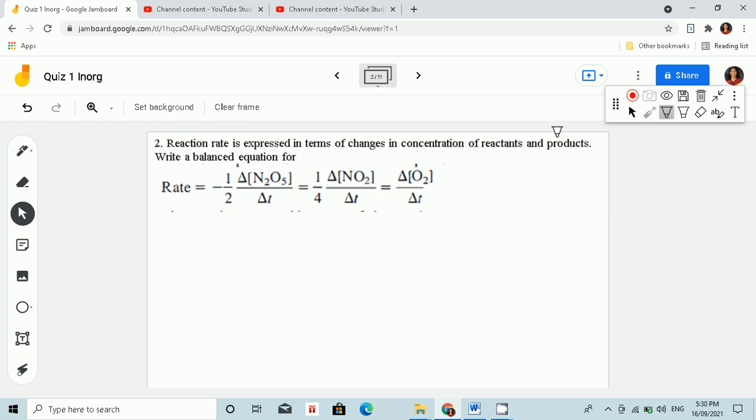So how are we going to do that? Remember that one half came from the coefficient, so we write it 2, but it's negative here, so it means it is the reactant.